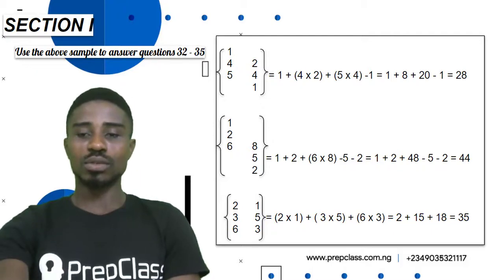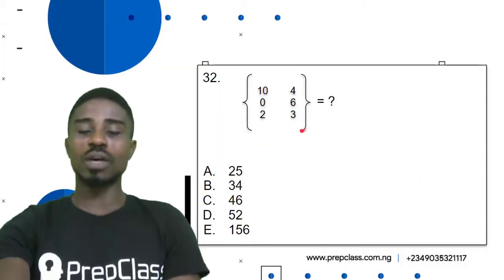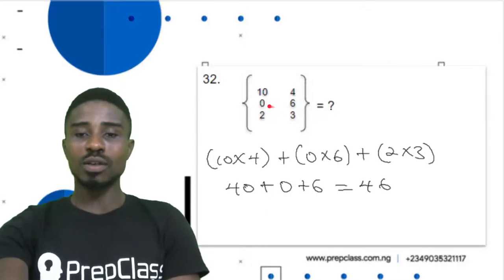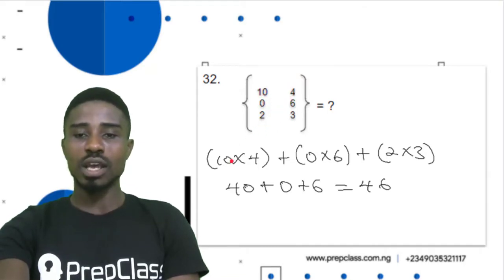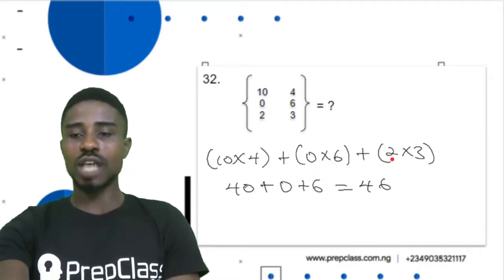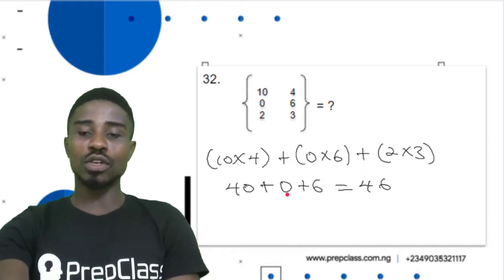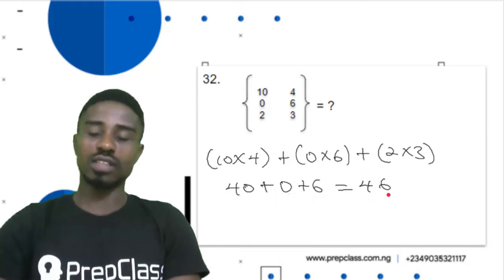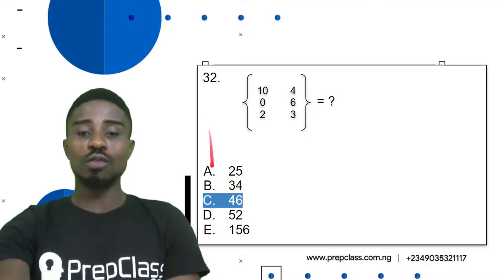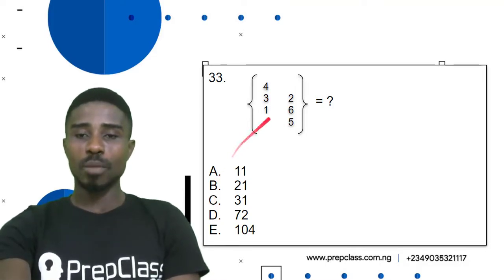For question 32 we have numbers arranged on both the left and right hand sides with no missing parts, so it will be (10 times 4) in brackets plus (6 times 0) in brackets plus (2 times 3) in brackets. Ten times 4 is 40, six times 0 is 0, two times 3 is 6. So 40 plus 0 is 40, plus 6 equals 46. Question 32: option 46 is our correct answer.